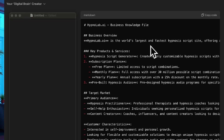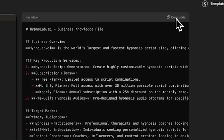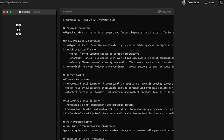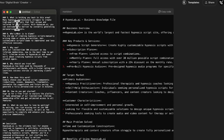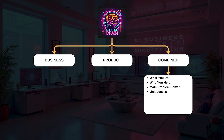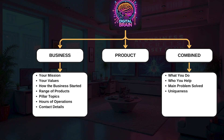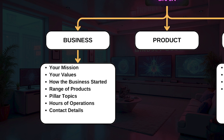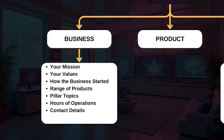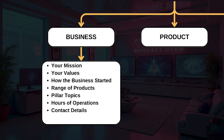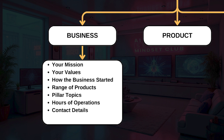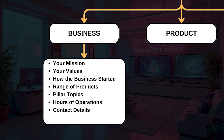Open up a text file, copy everything produced by this GPT into that text file, and name it appropriately — this is going to be your combined business and product knowledge file. You can also do this again, this time focusing specifically on your business from a high-level perspective, including additional details such as your mission and values, how your business started, the full range of your products and services, pillar topics relevant to your business, hours of operation, and contact details. This would create a business-only digital brain file.